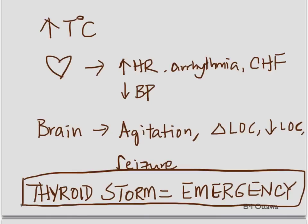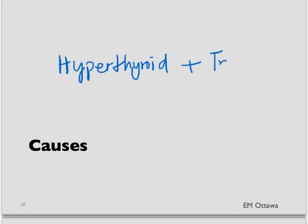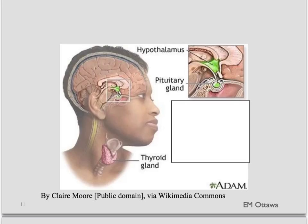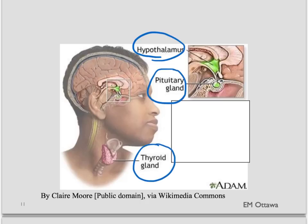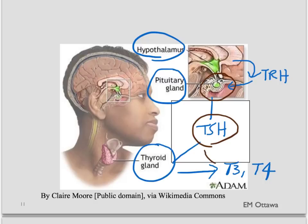We have to pick up these patients early and treat them aggressively. What are the causes of thyroid storm? Thyroid storm usually needs a pre-existing hyperthyroid state, plus a trigger. Looking at the hypothalamus-pituitary-thyroid axis: the hypothalamus secretes thyroid-releasing hormone into the pituitary gland, causing it to release thyroid-stimulating hormone (TSH). That TSH causes the thyroid gland to secrete T3 and T4 — the thyroid hormones. A pituitary adenoma, for example, can cause more TSH production, which in turn causes more T3 and T4.